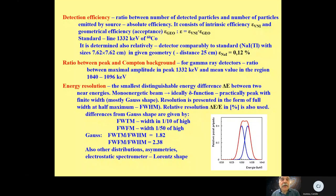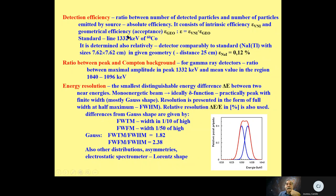We start with detection efficiency, which is the ratio between the number of detected particles and the number of particles emitted by the source. This is the absolute efficiency, and it consists of two independent efficiencies: intrinsic efficiency and geometrical efficiency (acceptance). Geometrical efficiency is the ratio between particles running in the direction of the sensitive volume of the detector and the number of particles emitted by the source.